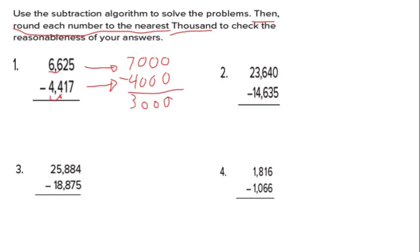Now let's do the normal subtraction using the algorithm. 5 minus 7: can't be, because 5 is smaller than 7. Borrow 1 from 2 — it becomes 1, and 5 becomes 15. Fifteen minus 7 equals 8. One minus 1 equals zero. Six minus 4 equals 2, and 6 minus 4 again equals 2. So the answer is 2,208. Compared to the rounding answer of 3,000 — it's very far, so it's not reasonable.